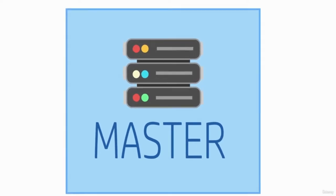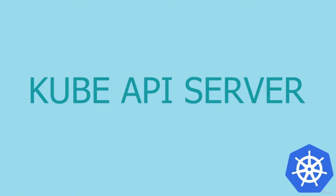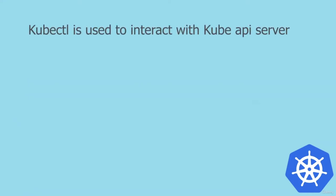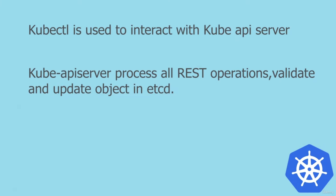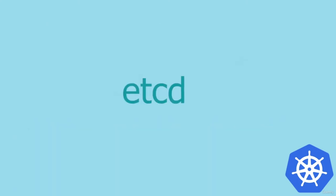Let's have a look inside a master node. There are five components: kube-apiserver, etcd, kube-controller-manager, kube-scheduler, and kube-cloud-manager. Let me describe each one. The kube-apiserver: whenever you use the kubectl command line interface, you are actually communicating with the kube-apiserver, which processes all your REST operations, validates them, and updates the corresponding objects in etcd. This is the only Kubernetes component that connects to etcd, and all other components must go through the API server to work with the cluster state.